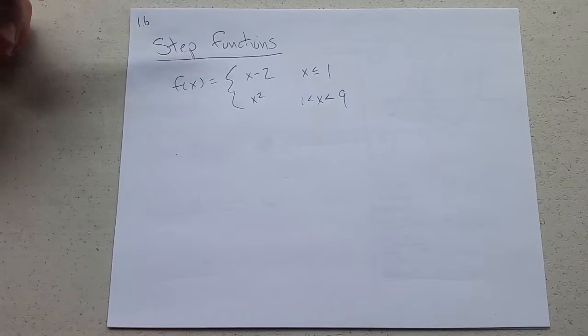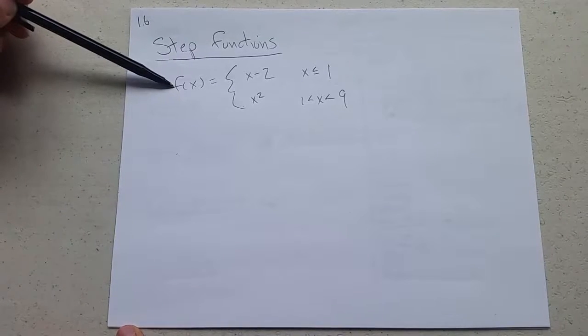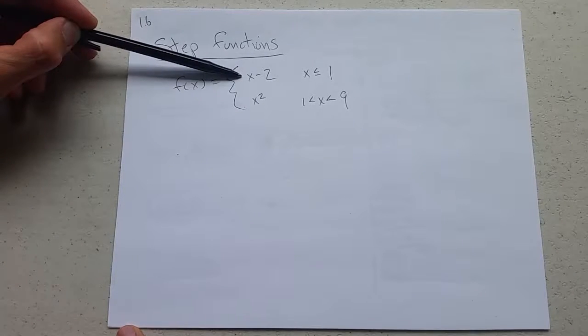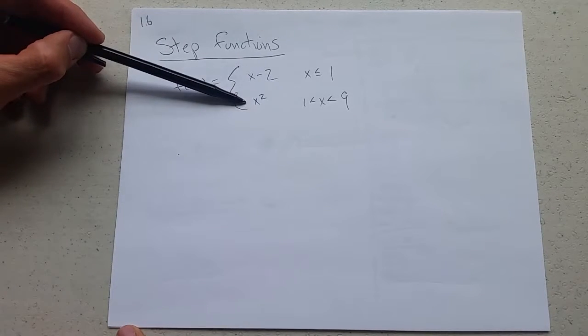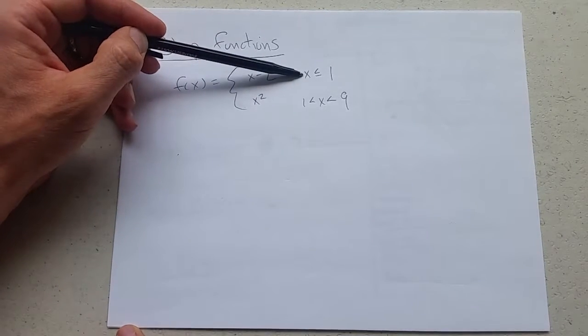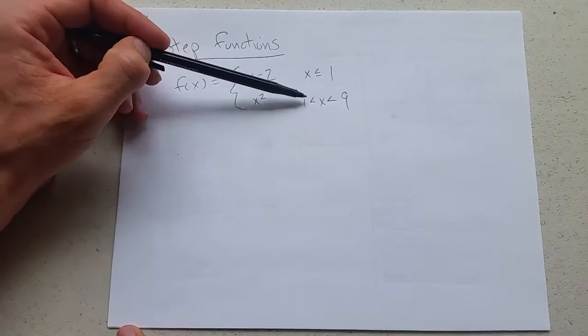What are step functions? A step function is a function that has more than one piece and each piece is listed on its own line. Here's a piece that's x minus 2, here's another piece that's x squared. How do I know when to use piece 1 and piece 2? Use the first piece when x is less than 1 and the second piece when x is between 1 and 9.